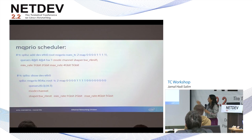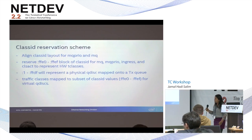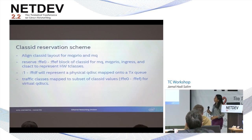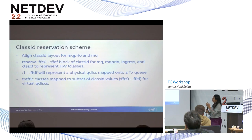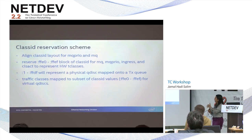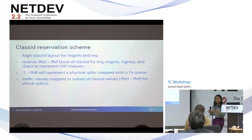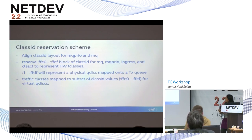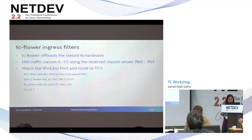New command line arguments were added. There was already the number of TCs and the priority-to-TC map. The new additions with hardware offload are mode channel and a new shaper option for bandwidth rate limits. There was also cleanup to align the MQ and MQPRIO QDisc class IDs, reserving FFE0 to FFEF for hardware TC class IDs, while 1 to FFTF are for the physical QDisc mapped to TXQ.